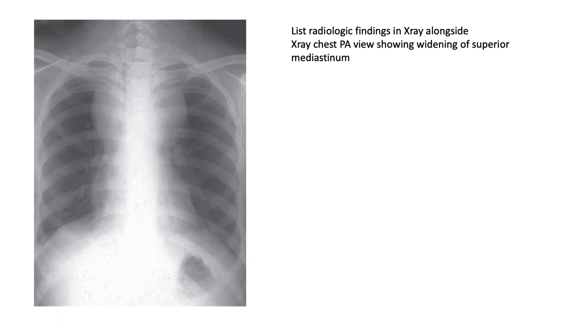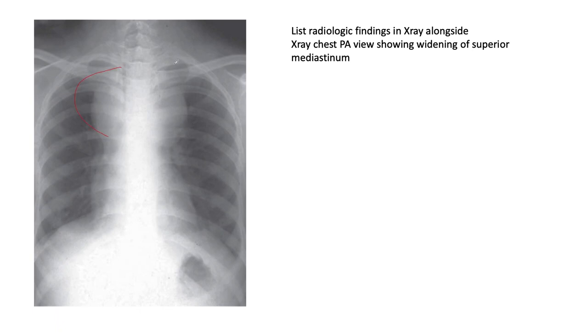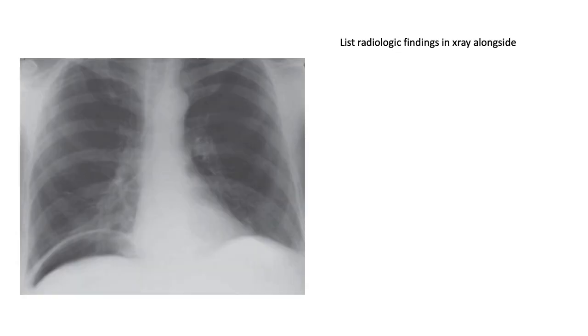Here we see widening of the superior mediastinum. Differentials include lymphoma, sarcoidosis, bronchial carcinoma, and retrosternal goitre.